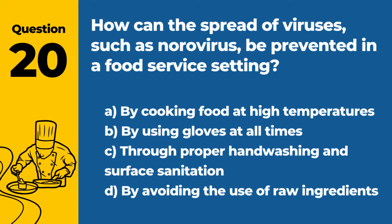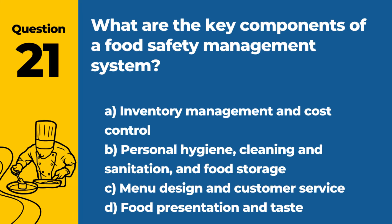Question 20. How can the spread of viruses, such as norovirus, be prevented in a food service setting? a. By cooking food at high temperatures. b. By using gloves at all times. c. Through proper hand washing and surface sanitation. d. By avoiding the use of raw ingredients. Answer c. Through proper hand washing and surface sanitation. The spread of viruses in a food service setting can be prevented through proper hand washing and surface sanitation.